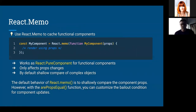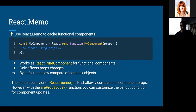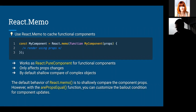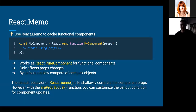React.memo is like PureComponent but for functional components — you can cache your functional component by the props it receives. Think of props as keys and the JSX as the cached value returned after pre-calculation. Memo also compares props shallowly, so if you need deeper or more complex comparison logic, use the second argument of memo — a function called arePropsEqual — where you can provide your own comparison conditions.